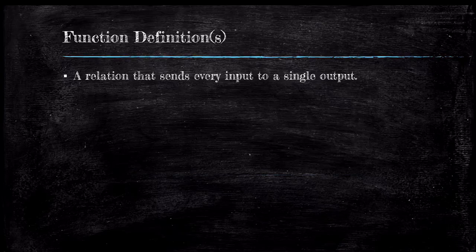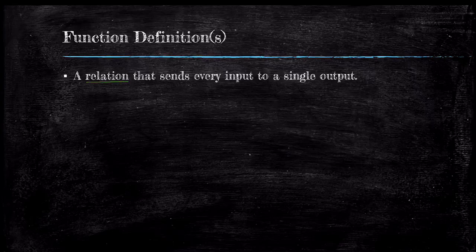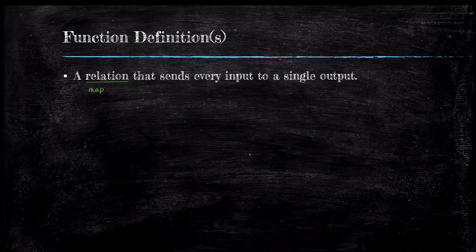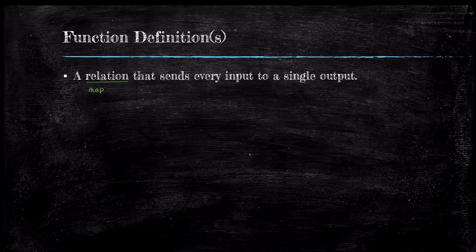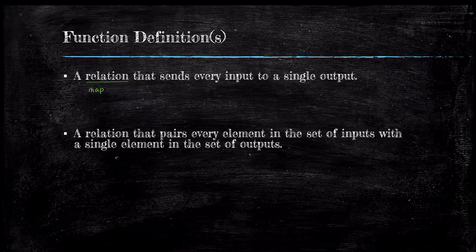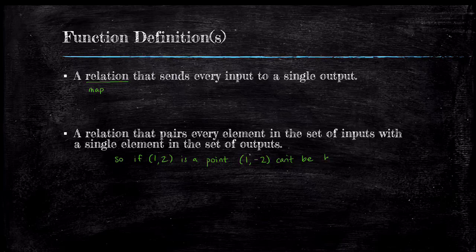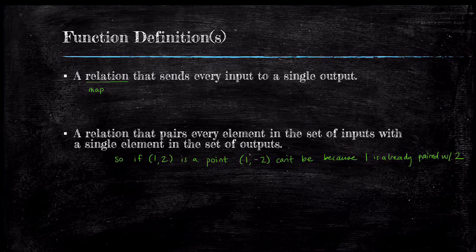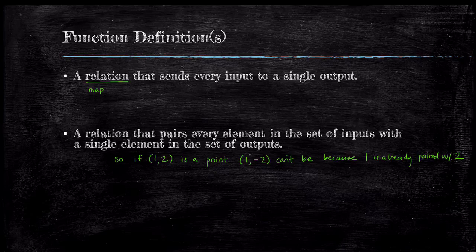Here are three common definitions. First, a relation that sends every input to a single output. Many instructors, myself included, will say a map as a synonym for relation. Another common definition is a relation that pairs every element in the set of inputs with a single element in the set of outputs. So if 1, 2 is a point, then 1, negative 2 cannot be a point because 1 is already paired with 2.